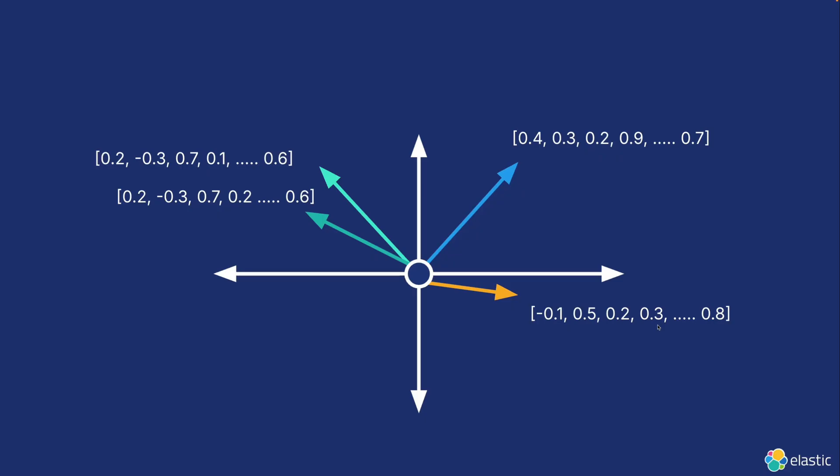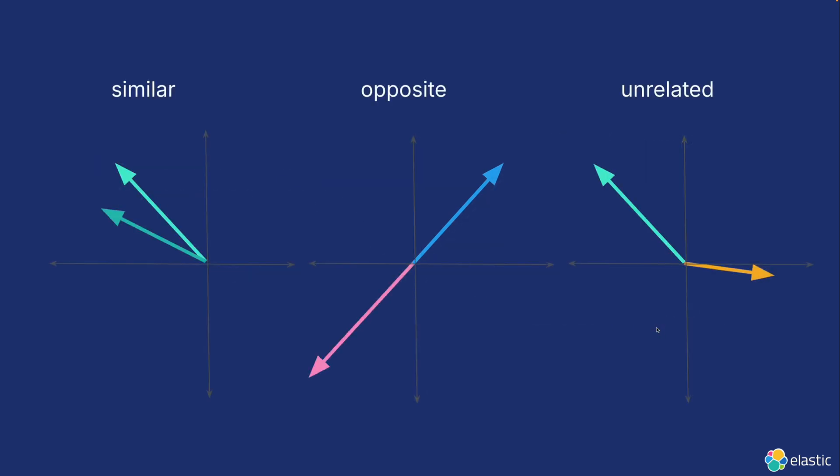Once we have our vectors generated, we can put them in the same vector space, which then allows us to interpret the distance between them. Using cosine similarity, we're able to see that closer vectors will have a small angle, opposites will go in different directions, and the rest will be unrelated words. There are different math formulas to use here, but cosine similarity is the most popular.